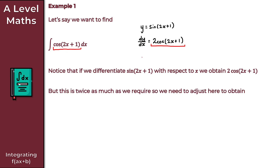Notice that our derivative dy/dx is twice as much as we require — we just want cos(2x + 1), but dy/dx gives us 2cos(2x + 1). So we need to adjust this equation. If we want dy/dx to be cos(2x + 1), we divide through by 2, giving us y = ½sin(2x + 1). If we do that, it gives us the result to this integral, because differentiation and integration are the inverse of each other.